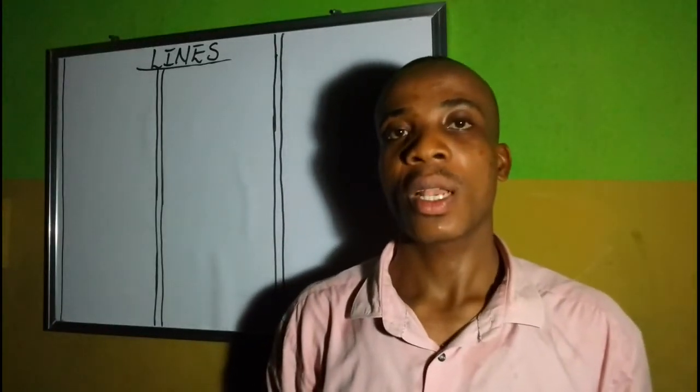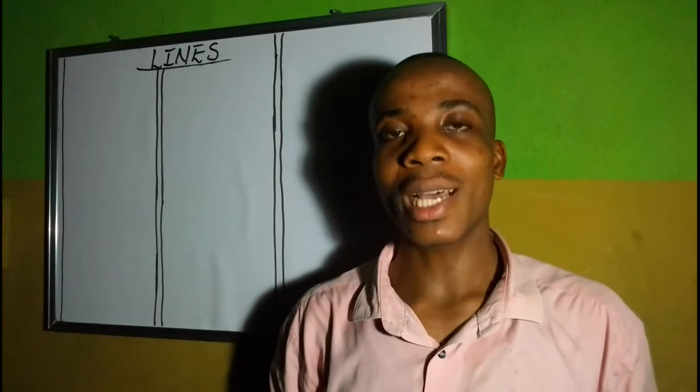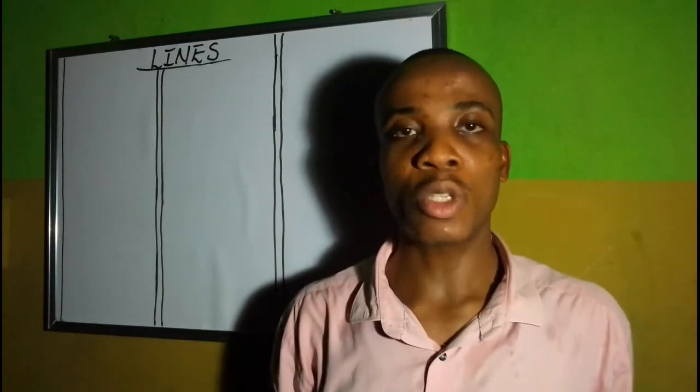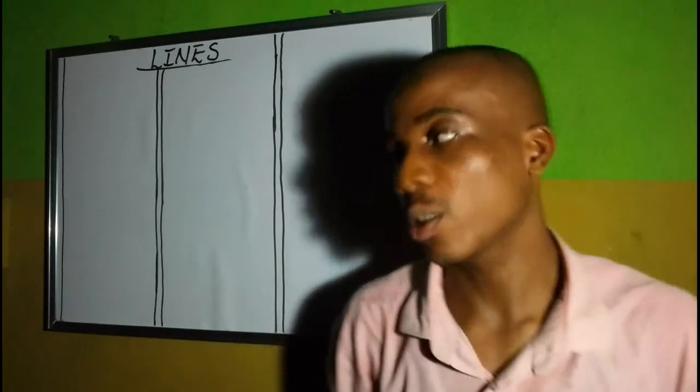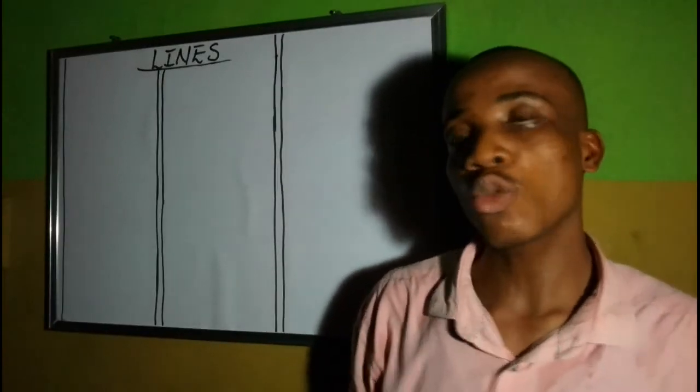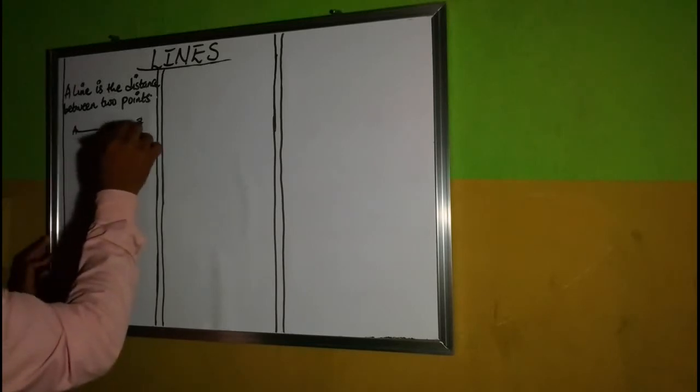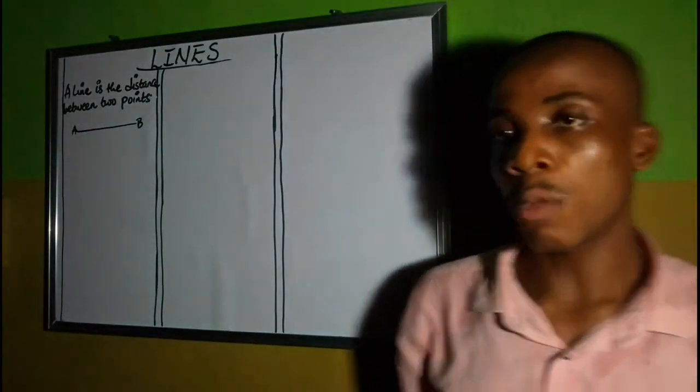In this video we want to focus on lines. A line is simply the distance between two points. So I can say that this is A and this is B, so the line AB is the distance between these two points. Now the types of lines that you should know, the most important lines, are what I am going to cover in this video.